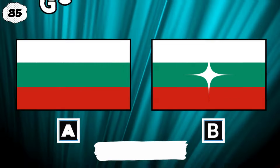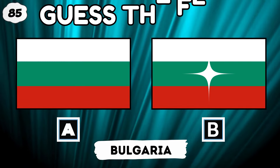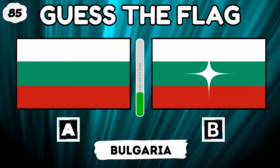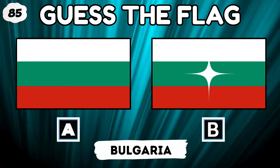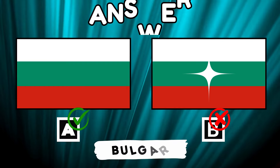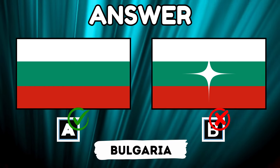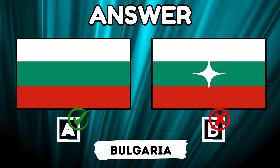Which is the correct Bulgarian flag? Great — the right answer is option A.